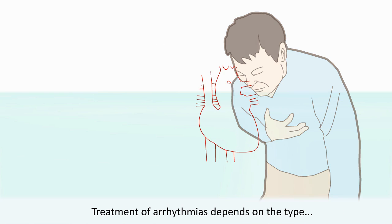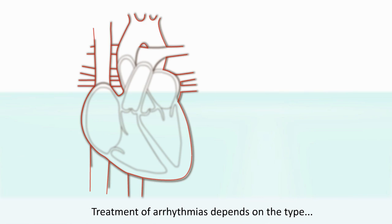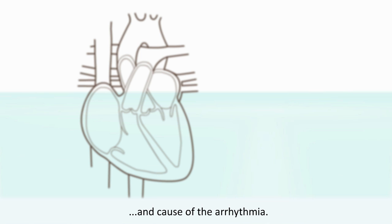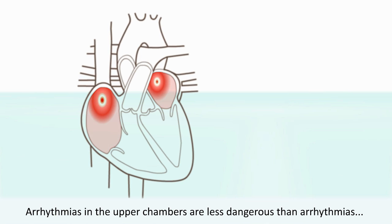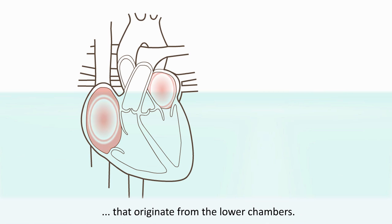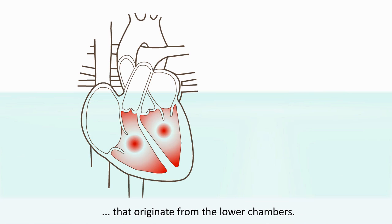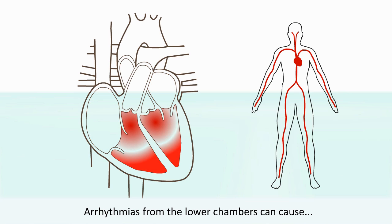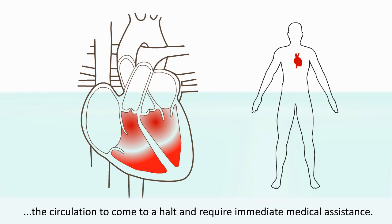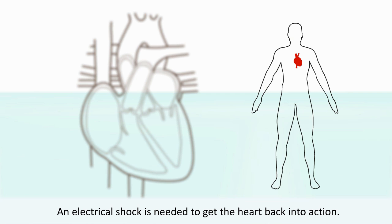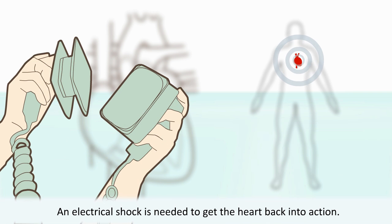Treatment of arrhythmias depends on the type and cause of the arrhythmia. Arrhythmias in the upper chambers are less dangerous than arrhythmias that originate from the lower chambers. Arrhythmias from the lower chambers can cause the circulation to come to a halt and require immediate medical assistance. An electrical shock is needed to get the heart back into action.